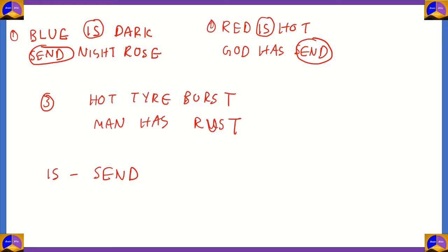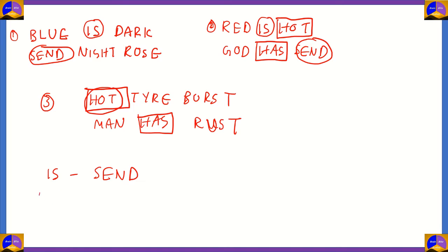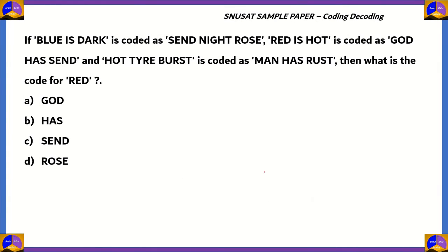Next, when we look at sentences two and three, the word 'hot' is repeated, and the code repeated in both of these statements is 'has'. Therefore, the word 'hot' is represented by the code 'has'. Now we know the code for 'is' and the code for 'hot'. The only word left is 'red', and the only code left is 'god'. Therefore, the word 'red' must be represented by the code 'god'. The correct answer for this coding and decoding question is option A, 'god'.